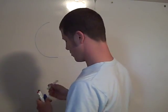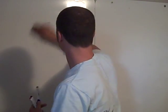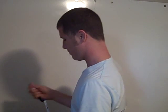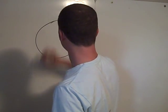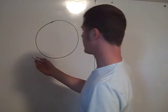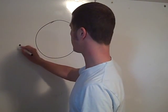But if you have a circle, and a point outside that circle, say we have point P here.